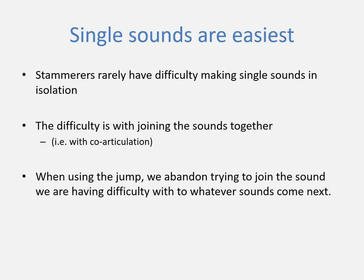So, with my name Paul, the most likely difficulty would be in joining the initial 'p' sound with the vowel 'or'. It would be much less common to experience difficulty later on in that word. So, using the jump, if I experience difficulty with the 'p', I abandon it, pause briefly, and then say the rest of the word in isolation: 'all'. For example, if I was to say 'my name is Paul' and I was to have some difficulty on that initial 'p' and use the jump, it would probably sound something like this: 'My name is all.'